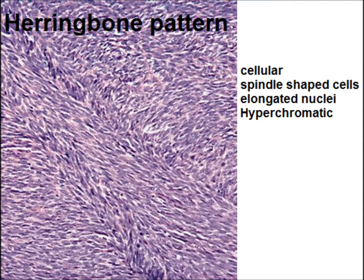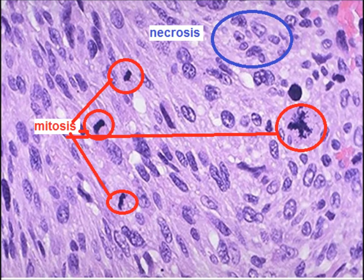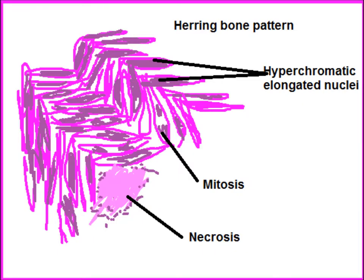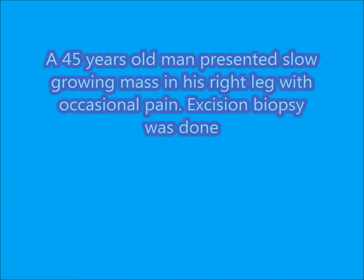The herring bone pattern resembles a fish skeleton. The tumor is composed of cellular spindle-shaped cells with elongated and hyperchromatic nuclei. Under high power, you can see spindle-shaped nuclei, scanty cytoplasm, a high nuclear-to-cytoplasmic ratio, and mitosis. In this photomicrograph you can appreciate necrosis and frequent and abnormal mitosis.